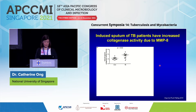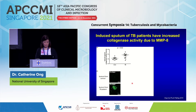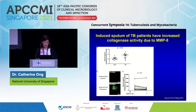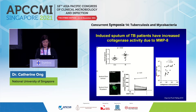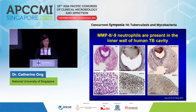Moving on to functional assays: the collagenase activity in TB patients' sputum is increased compared to household contacts. Using an MMP8-neutralizing antibody significantly decreases type 1 collagenase activity. The MMP8 concentrations also strongly correlate with type 1 collagenase activity. This indicates that neutrophils which secrete MMP8 can potentially be the source of the collagenase activity seen within the respiratory compartment of pulmonary TB patients.